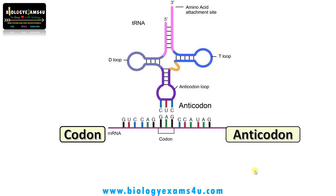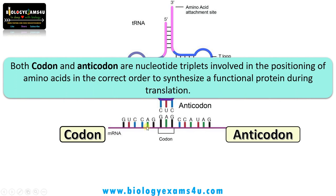Hi friends, hope you are fine. Today let us understand a basic topic in molecular biology: how a codon is different from an anticodon within five minutes. Let's have a side-by-side comparison for better understanding. Both codon and anticodon are nucleotide triplets, or made up of three nucleotides, involved in the positioning of amino acids in the correct sequence to synthesize a functional protein during translation. Understanding codon and anticodon is very important in understanding the central dogma of biology.